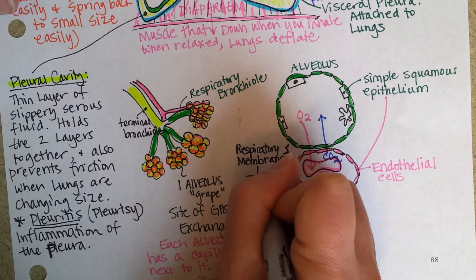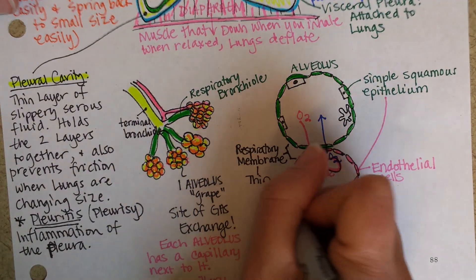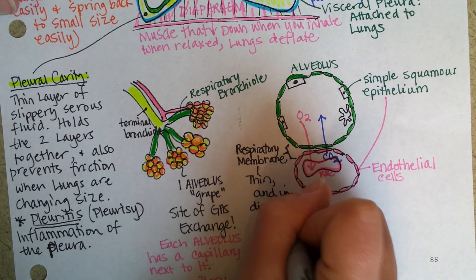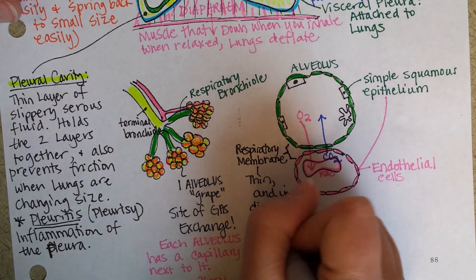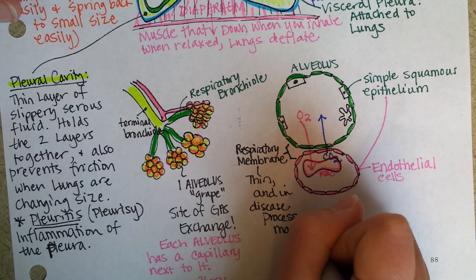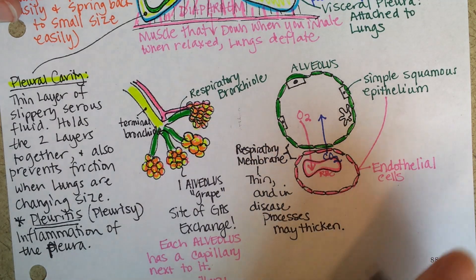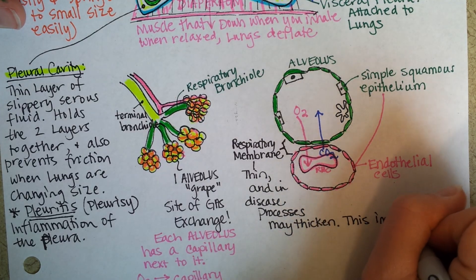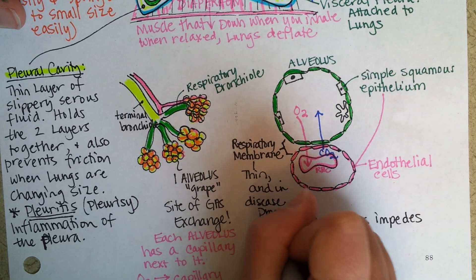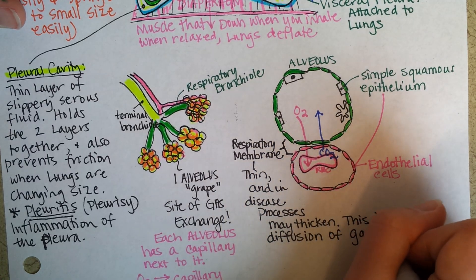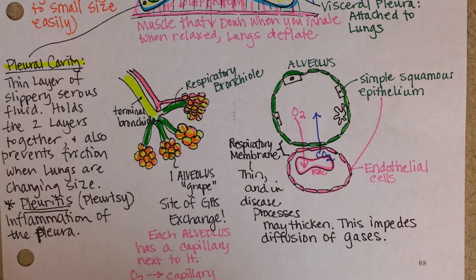The respiratory membrane is very thin. And in disease processes it may thicken, may get fibrotic tissue there. Anything that impedes diffusion of gases is going to cause respiratory problems.